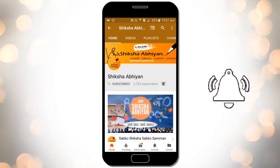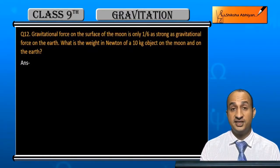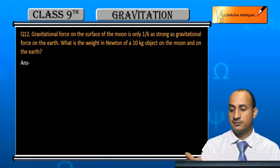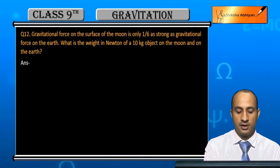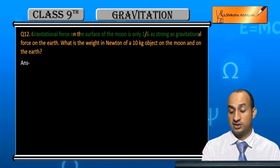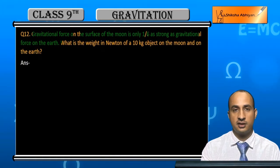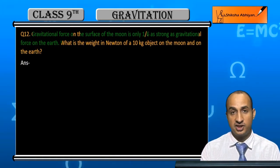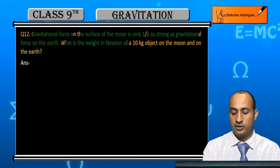Now students, see question 12. Question 12 is: gravitational force on the surface of moon is one-sixth as strong as the gravitational force on earth. So the weight in newtons of a 10 kg object.